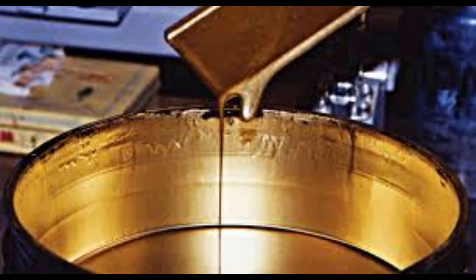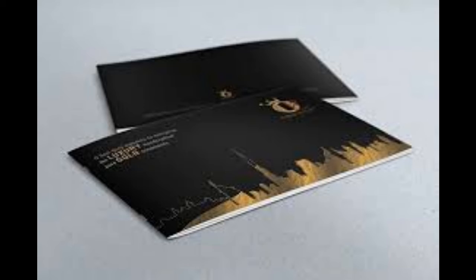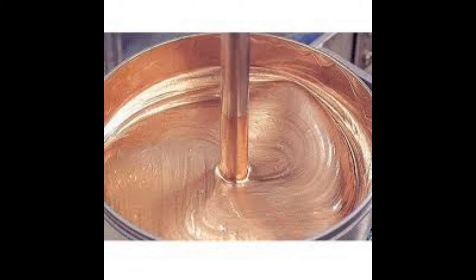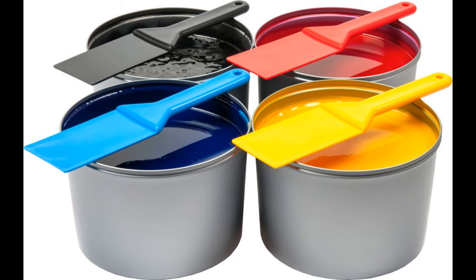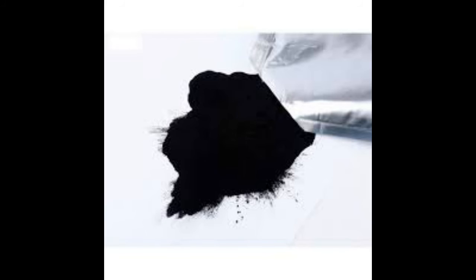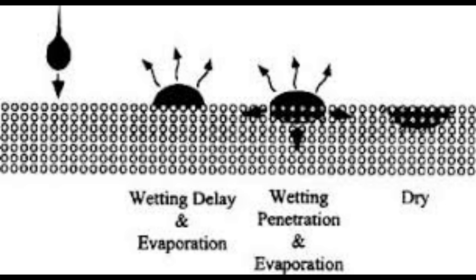Metallic inks produce colored effects like gold, silver, copper, or bronze. Offset ink, used for offset lithography, is very finely ground and free from water-soluble particles. There is also laser ink, which melts in a laser printer due to the excessive heat produced by the laser printer.